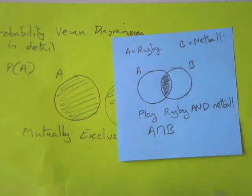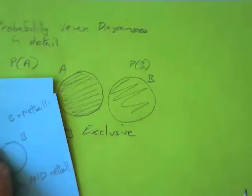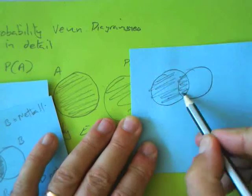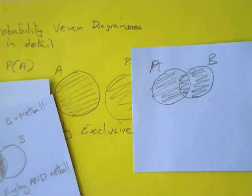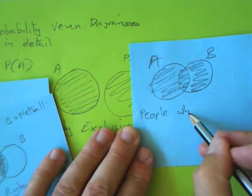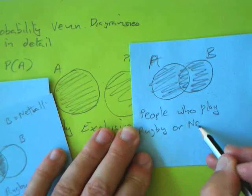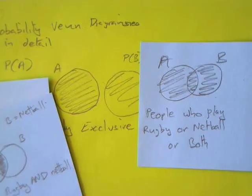So now we're actually getting somewhere and making some understanding of what's going on. Don't be frightened to put things in words — probability is one of those subjects that actually does talk about words. So how do we find this shaded area? That is the people who play rugby or netball or both rugby and netball.